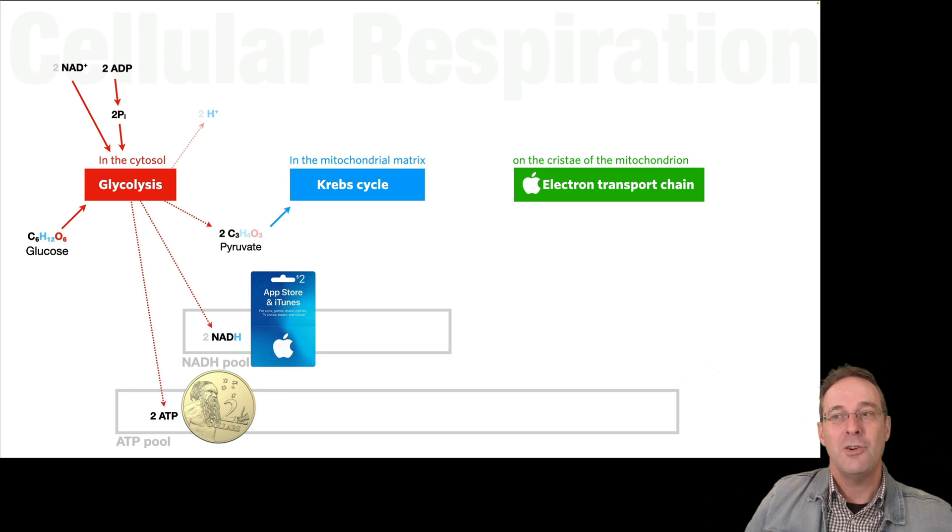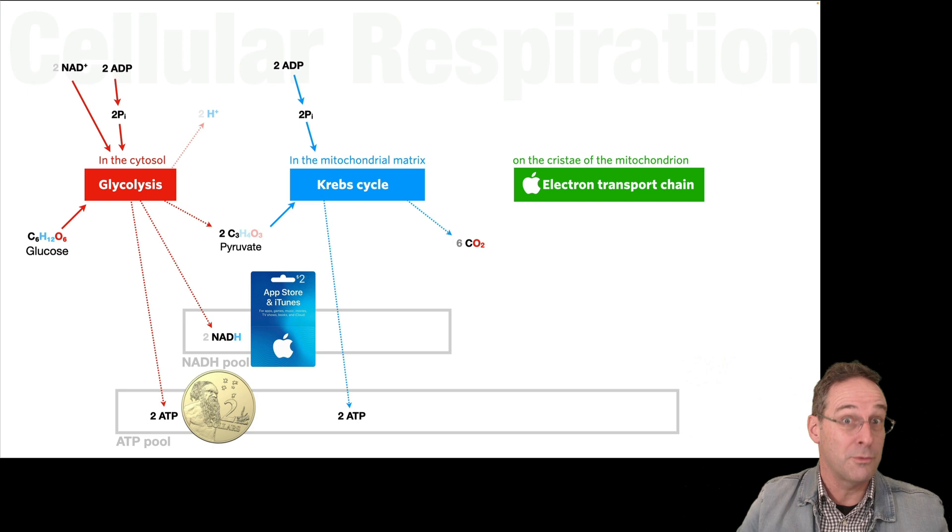The two pyruvate molecules that we had go into the Krebs cycle, and through a series of processes, they come out as carbon dioxide. And again, we've got a big molecule being broken down into smaller molecules and that releases energy, enough energy to turn two more ADPs and inorganic phosphates into ATP, giving us so far four ATP in our ATP pool. We also make eight more NADH molecules. Now at this stage, everything looks, at least as far as the hydrogens are concerned, pretty balanced, right? Because we had two pyruvate molecules going into the Krebs cycle, each of them with four hydrogens. That's eight hydrogens. And we've now just produced eight NADH, which accounts for those eight hydrogens that went into the Krebs cycle.